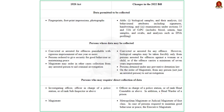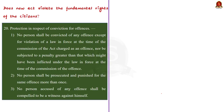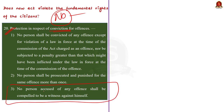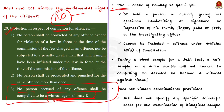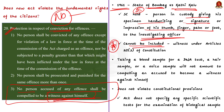Does this new act actually violate the fundamental rights of citizens? According to the author, it is a very big no. The fundamental right in question is Article 20, specifically Article 20(3), which states no person accused of any offense shall be compelled to be a witness against himself. To justify his stand, the author cites the 1961 Supreme Court case State of Bombay versus Kathikalu, which held that a person in custody giving specimen handwriting, signature, or thumb/finger/palm/foot impression to the investigating officer cannot be included in the expression 'to be a witness' under Article 20(3) of the Constitution.